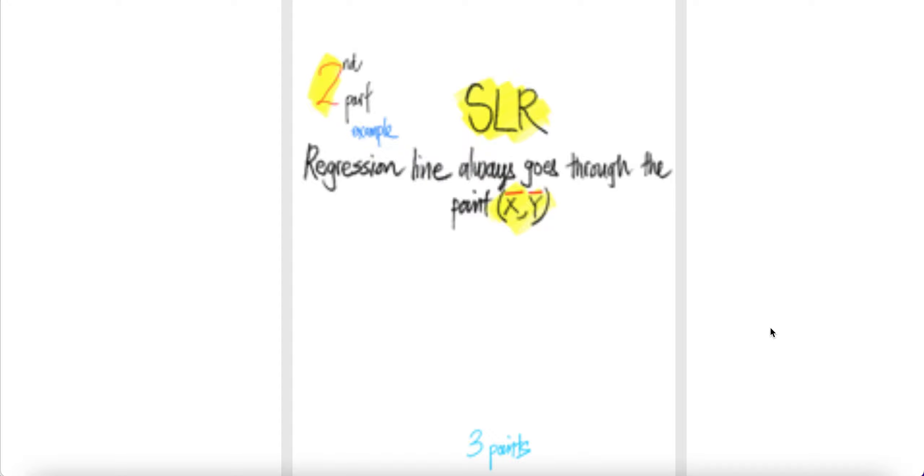We're going to look at the second part of SLR, Simple Linear Regression. In this video, we're going to look at an example. Previously, in the first part, we showed that bar x comma bar y sits on the regression line, i.e. sits on the predicted line.